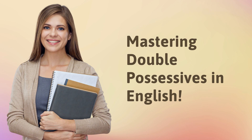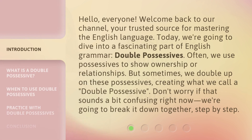Hello, everyone. Welcome back to our channel, your trusted source for mastering the English language. Today, we're going to dive into a fascinating part of English grammar: double possessives. We use possessives to show ownership or relationships, but sometimes we double up on these possessives, creating what we call a double possessive. Don't worry if that sounds confusing right now — we're going to break it down together, step by step.